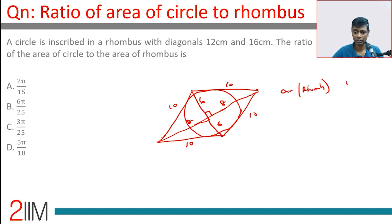Area of rhombus is very simple, half into 6 into 8, which is 6 into 4, which is 24 square units. If you find the radius of the circle we're through.